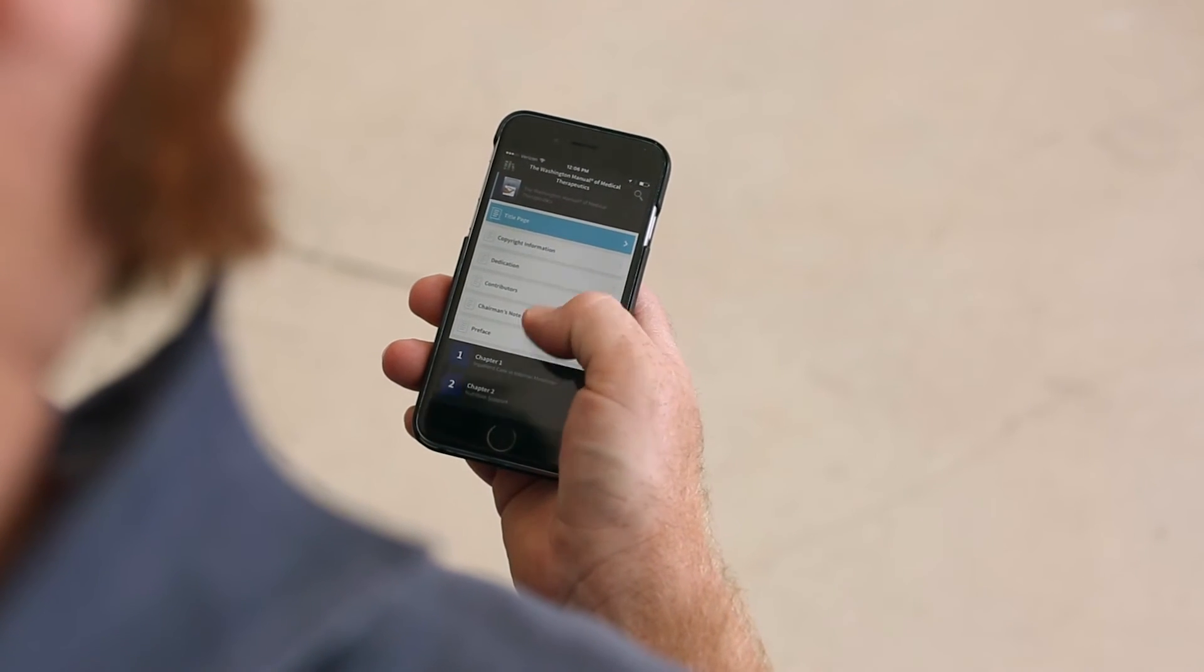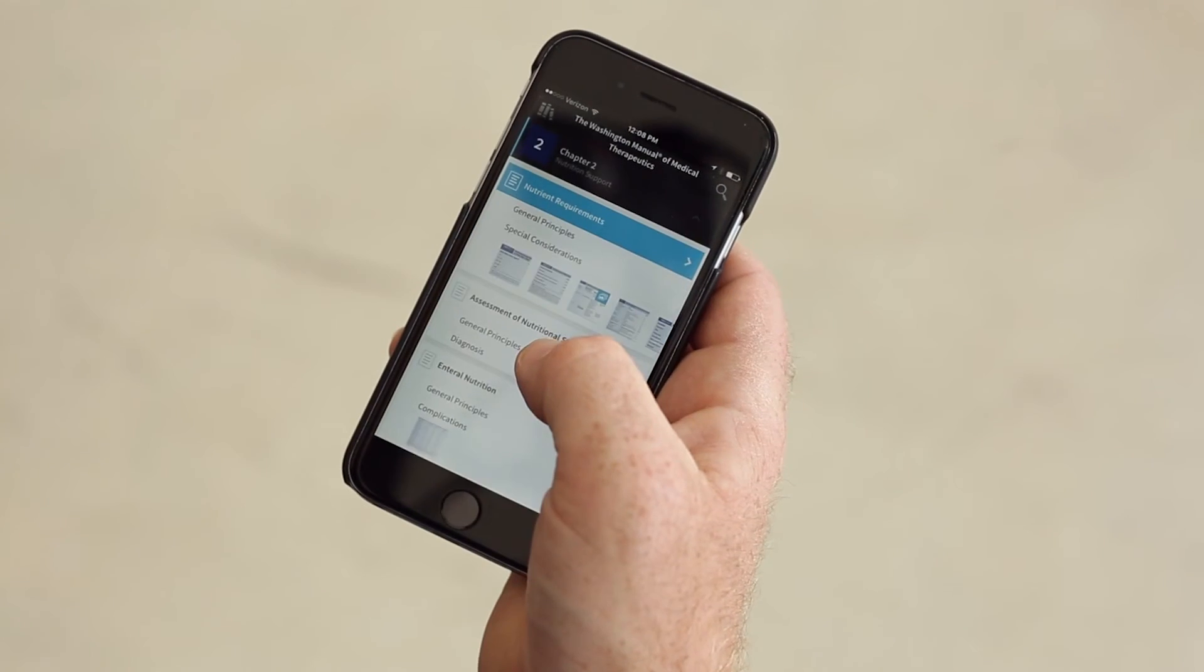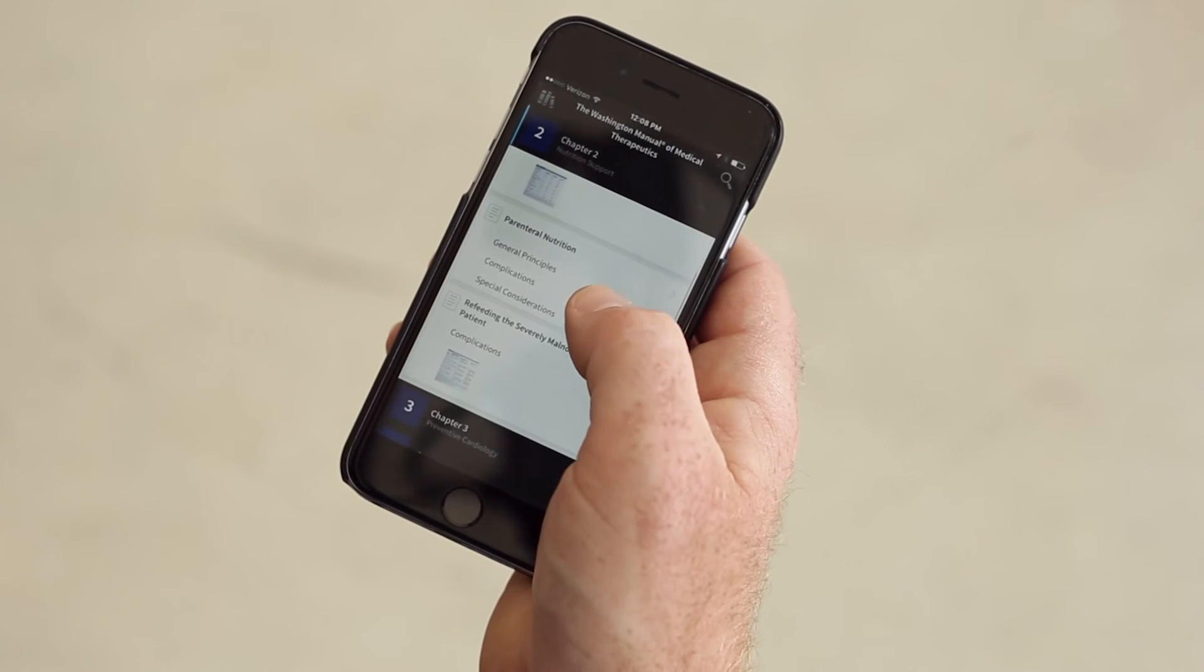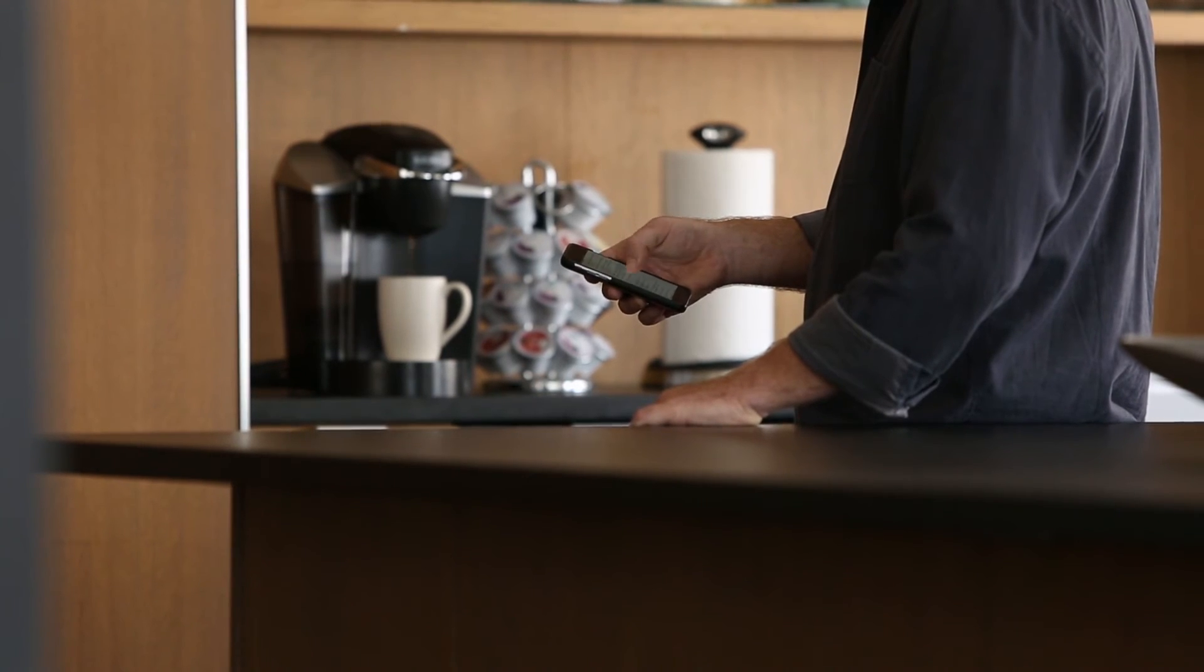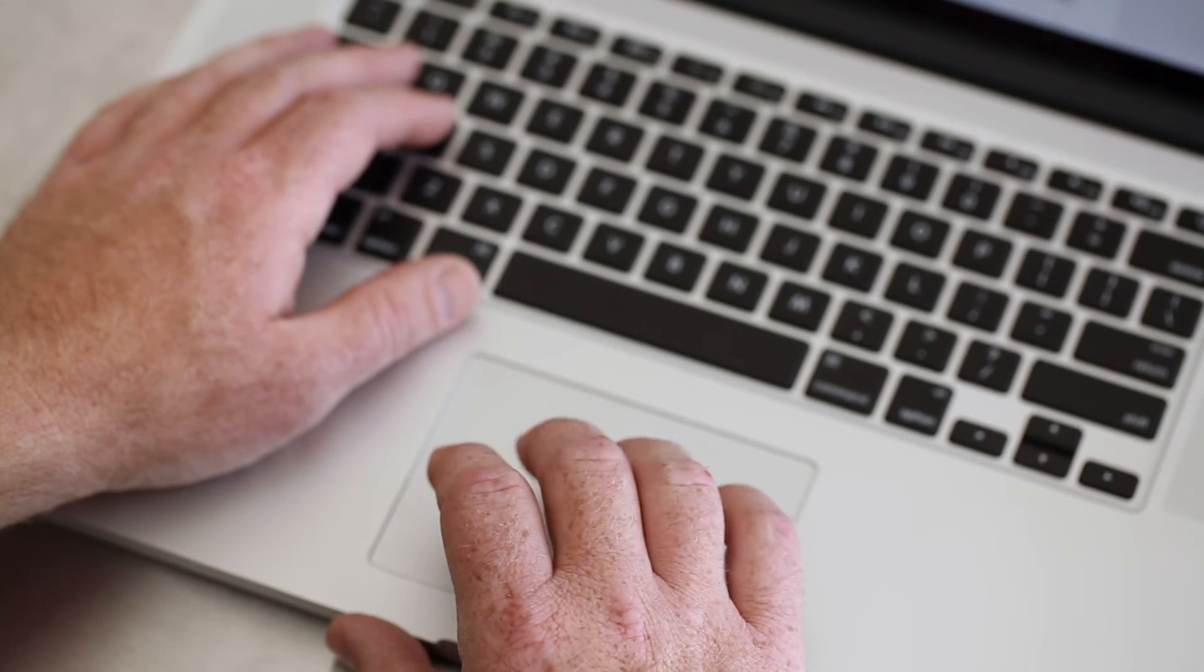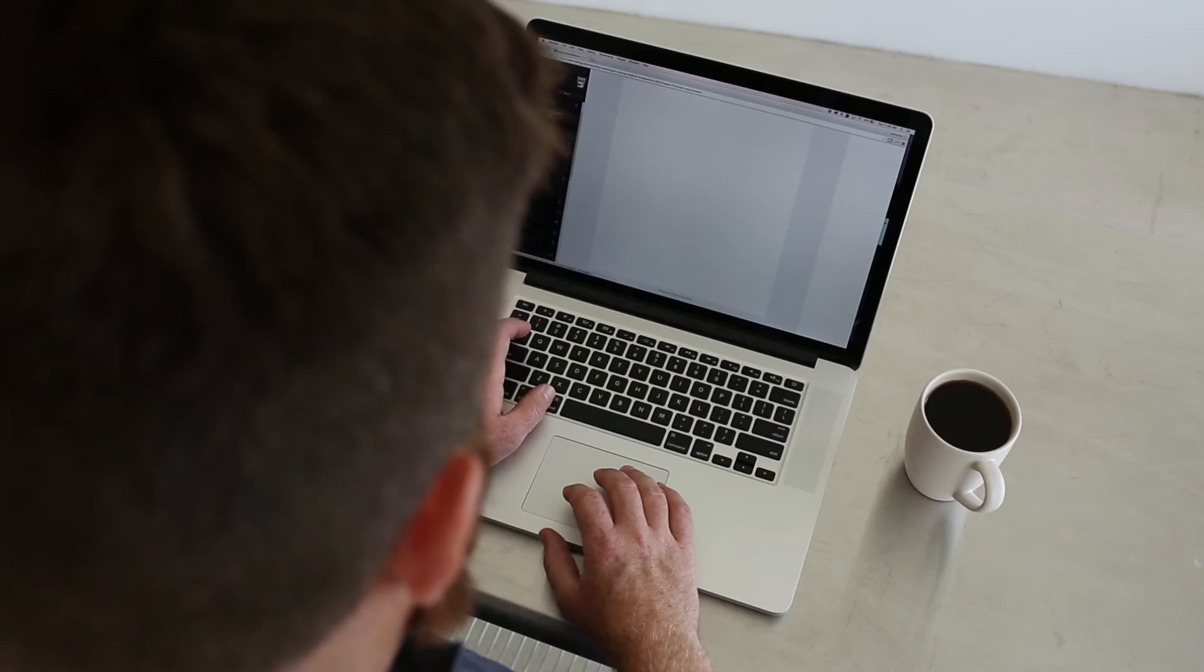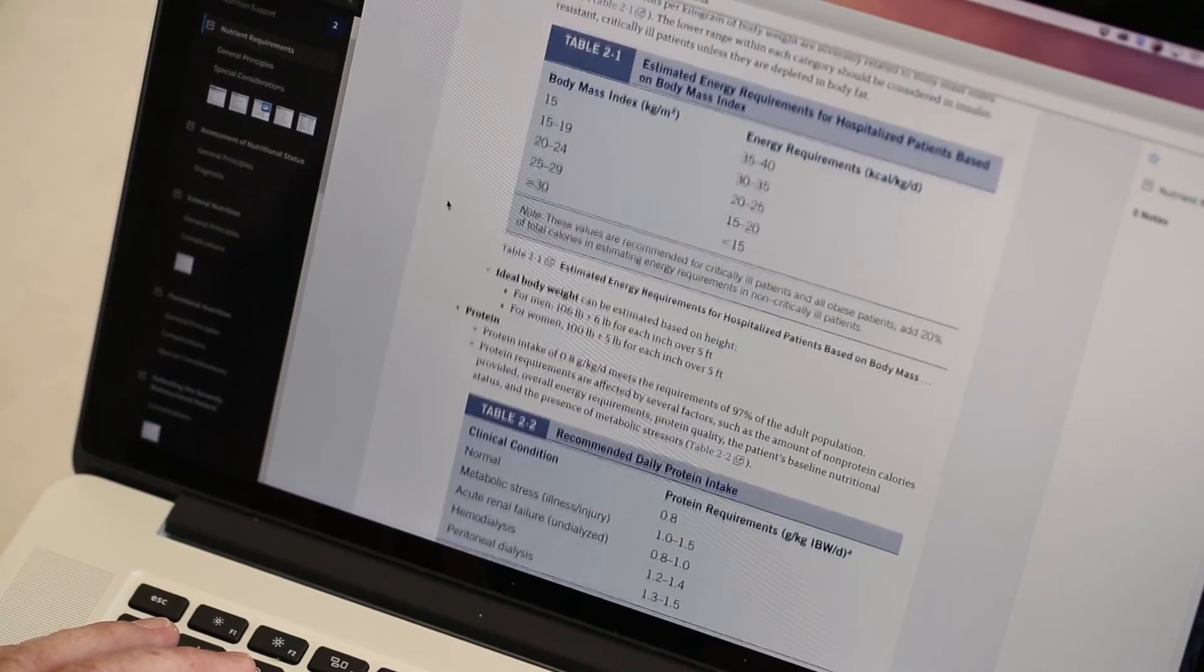A great thing that we have now is a mobile app for the Washington Manual. I think having an actual paper copy as a good resource for quick review of core concepts, core ways to treat very common conditions and more rare conditions, is really helpful. And then having the app and the e-book available helps you at the bedside, at work, for things on the go.